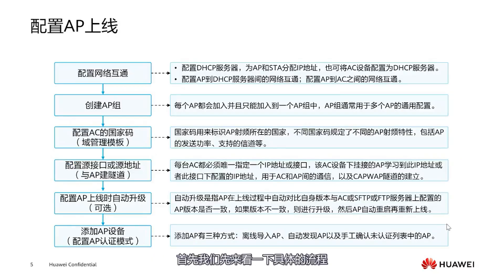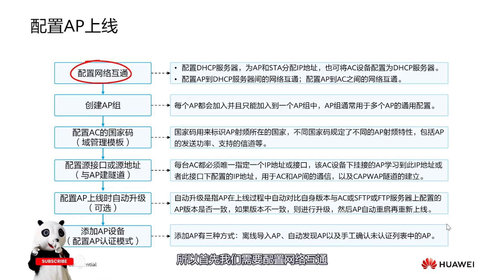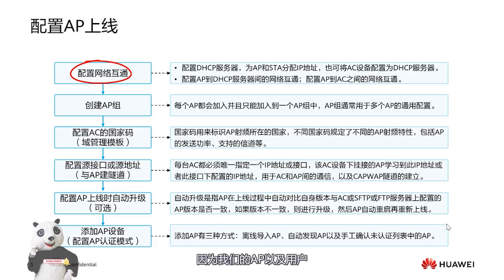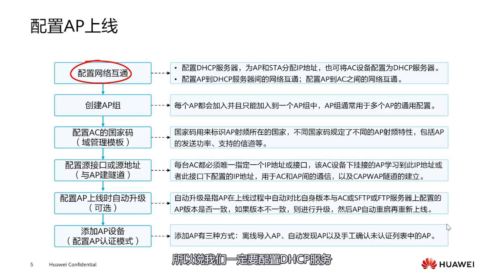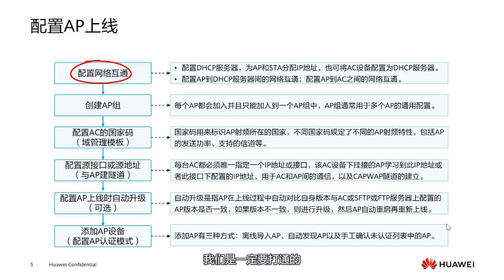The first step is AP going online. The purpose of using WLAN is to allow users to access the network, so first we need to configure network interconnectivity. Our APs and users can automatically obtain a DHCP address during use, so we must configure DHCP services. We can set up the AC device as a DHCP server, or use our core switch as the DHCP server. The network between the AP and the DHCP server must be interconnected, and the network between AP and AC also needs to be interconnected. These are explained separately because AC is not necessarily the DHCP server.